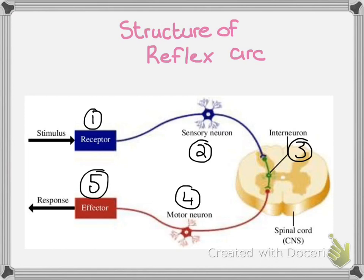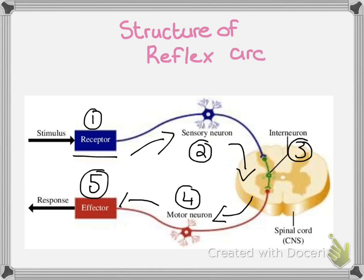Looking at how a simple reflex arc functions — I'd like you to star that as well and mark it as an NB for exam in your textbook. Those bullet points clearly outline how we start from the receptor, move into the sensory neuron, and our information reaches the central nervous system where it is interpreted. An action is decided upon, which is passed on to a motor neuron, that motor neuron is then sent to an effector organ of some kind, like a skeletal muscle or even a gland, and an action is brought about.